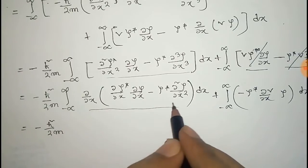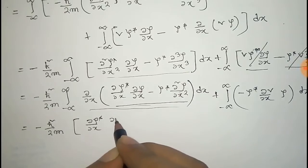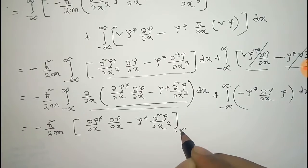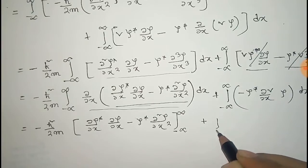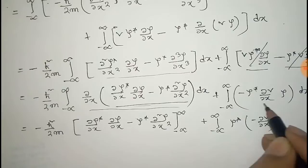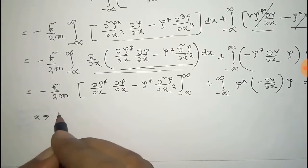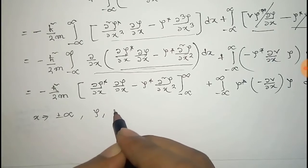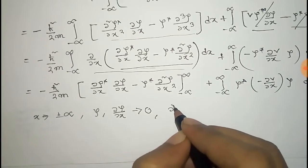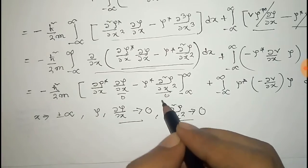Integrating the first part, we evaluate [(∂ψ*/∂x)(∂ψ/∂x) − ψ*(∂²ψ/∂x²)] at the limits ±∞. Since ψ → 0 and ∂ψ/∂x → 0 (and hence ∂²ψ/∂x² → 0) as x → ±∞, this boundary term equals zero.